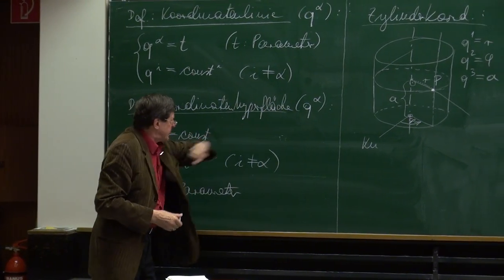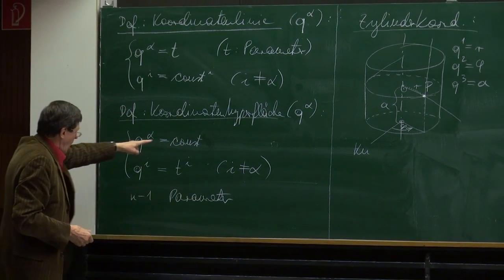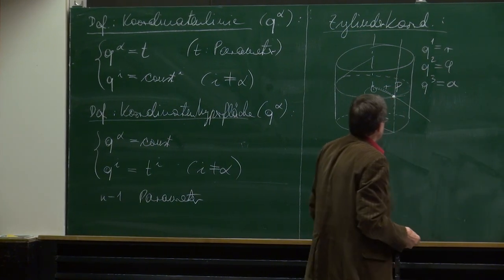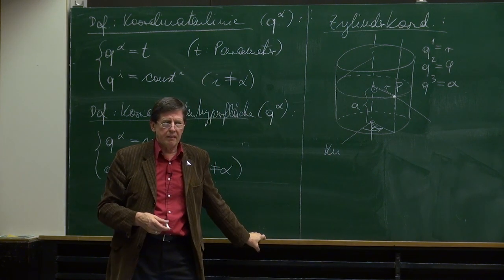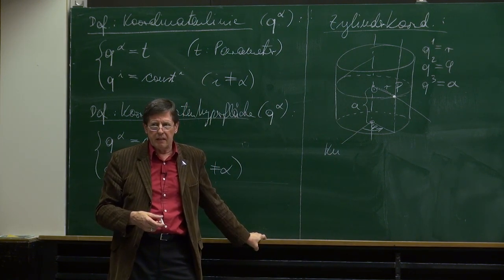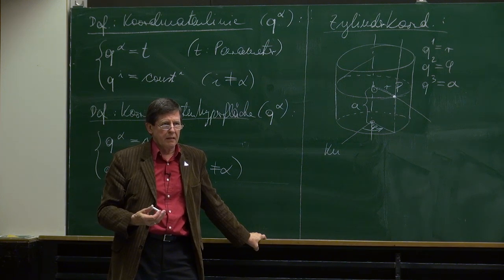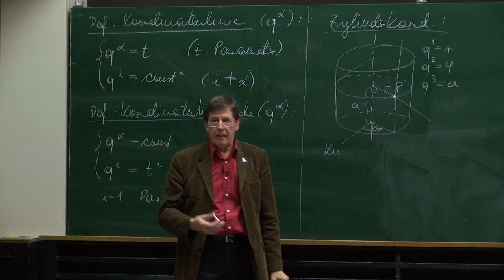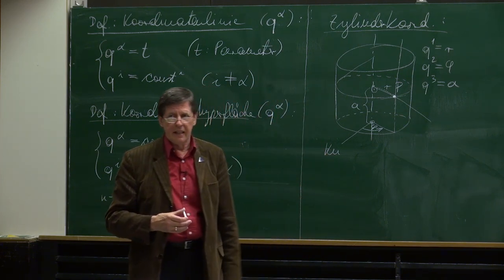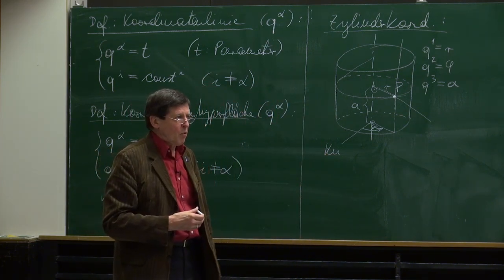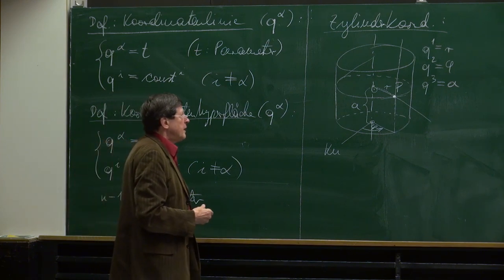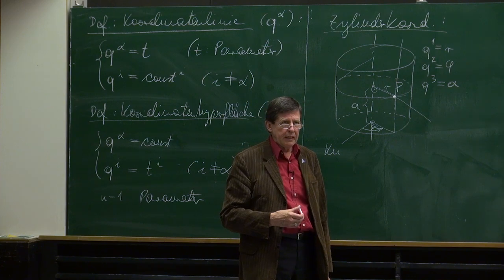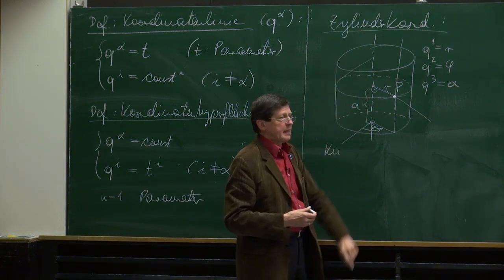Jetzt die Koordinatenhyperflächen. Die Q1-Hyperfläche: Q1 konstant, alle anderen variieren. Q1 ist R, also R ist konstant, alles andere variiert. Was wird das sein? Der Zylinder – diese Zylinderfläche. Deshalb heißen die Koordinaten Zylinderkoordinaten, weil die Q1-Koordinatenflächen Zylinderflächen sind – konzentrische Zylinderflächen, alle konzentrisch zur Achse.